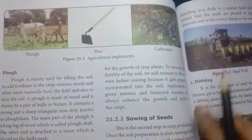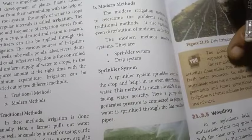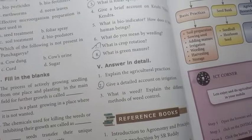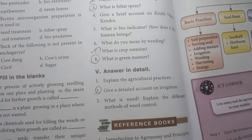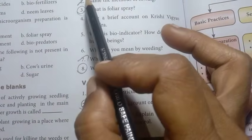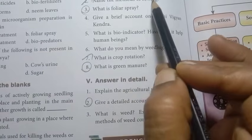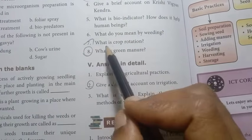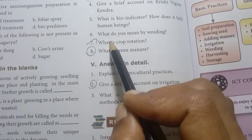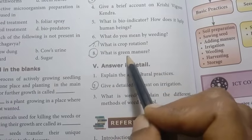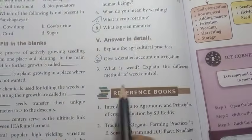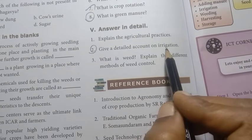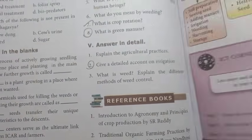Unit 21: Crop Production and Management, page number 258. Answer briefly: Define ploughing. Name the methods of sowing — previous year annual question. What is foliar spray? — important. What is crop rotation? — previous year question. What is green manure? — previous year important question. Answer in detail: Give a detailed account on irrigation — important.